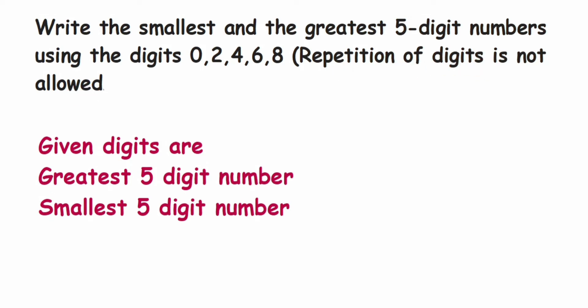Here they are asking us to make a five-digit number using these given digits. So let us write down what the digits given to us are. The given digits are 0, 2, 4, 6, and 8. So we have to use only these five digits to form the number.